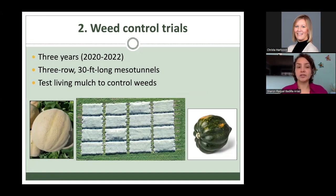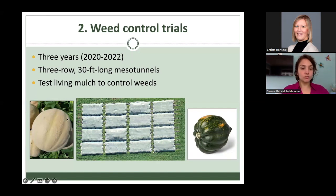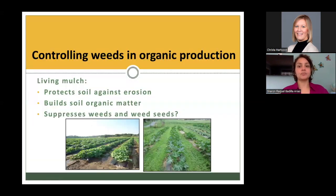The theme of today's talk is the weed control trials. For those trials, conducted over the same three years, we also had three rows but with 30-feet-long mesotunnels. We tested living mulch to control weeds for both mossmelon variety Athena and acorn squash variety Table Ace. In organic production, weed control options are limited, which is why we decided to test living mulch.